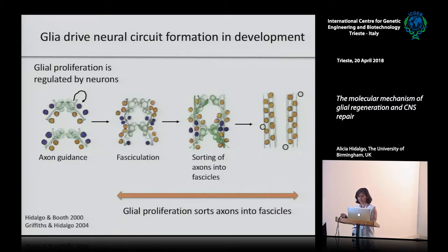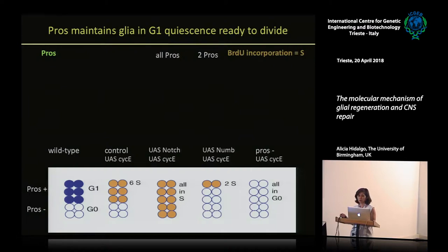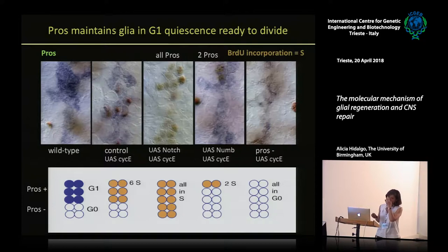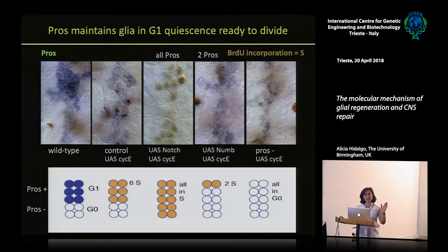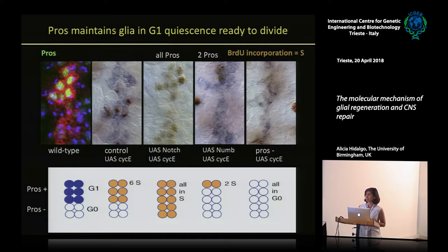Glial proliferation is controlled during development, and an important finding is that a key gene enabling the proliferation of the glia during neuron-glia interactions is Prospero. Normally the glia in the embryo, after the formation of the fascicle at the end of axon guidance, will not divide again. However, they express Prospero, and what we found is that although they don't divide again, they don't fully exit the cell cycle - they remain in G1.